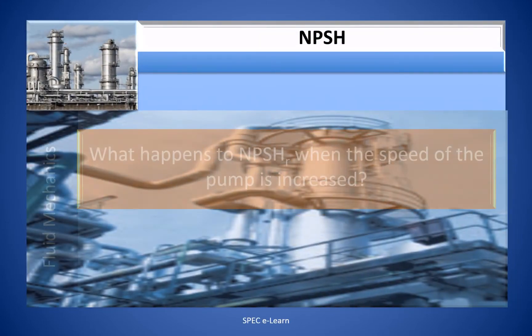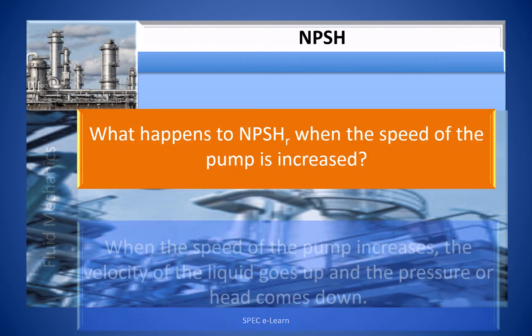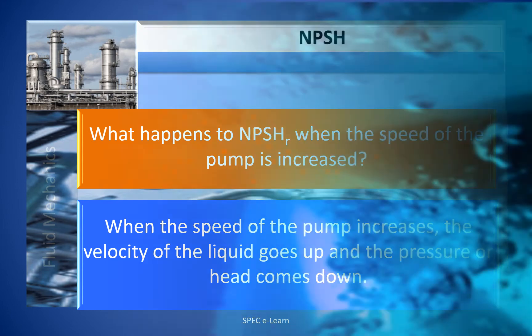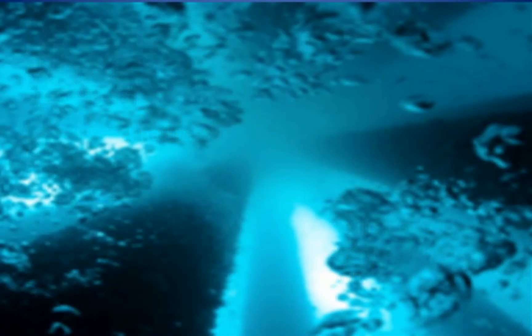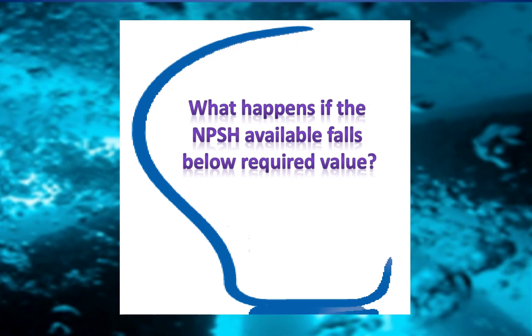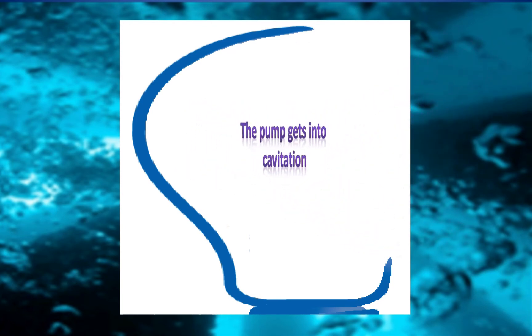What happens to the NPSH required when the speed of the pump is increased? When the speed of the pump increases, the velocity of the liquid goes up and the pressure or head comes down. If the NPSH available falls below the required value, the pump gets into cavitation.